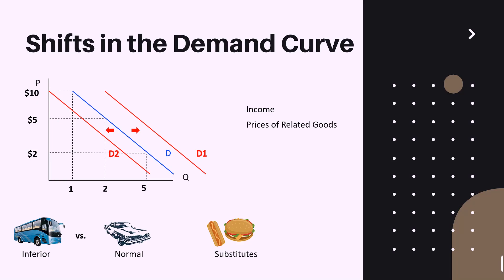The other type of related goods are complements — products typically used together, such as gasoline and cars. For complements, prices move in the same direction in terms of their demand effect: if the price of gasoline rises, driving a car becomes more expensive overall, so the demand for cars decreases. This links back to the law of demand — an increase in the cost of a related product ultimately results in lower quantity demanded.